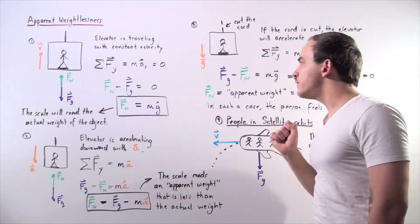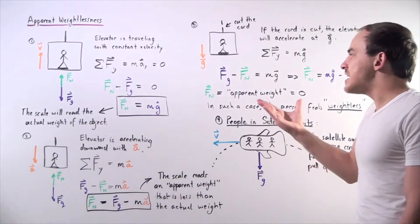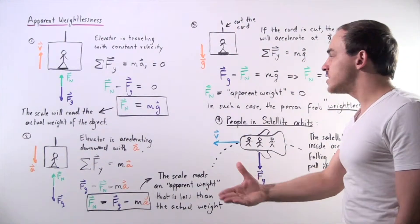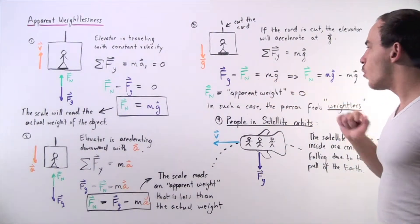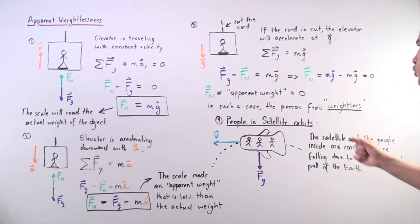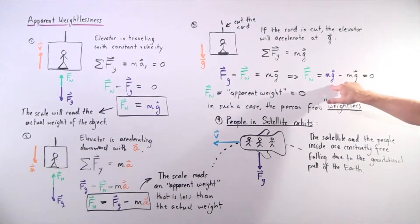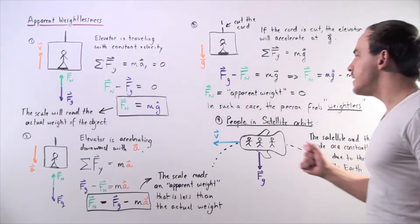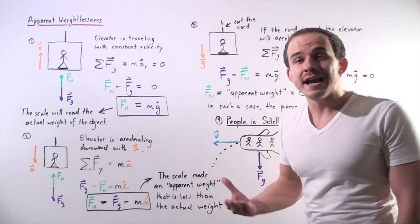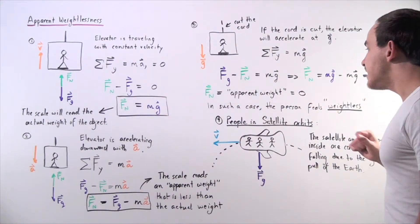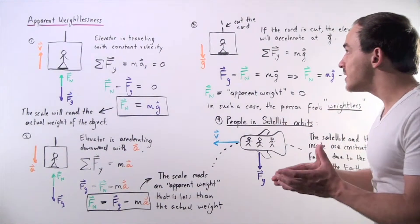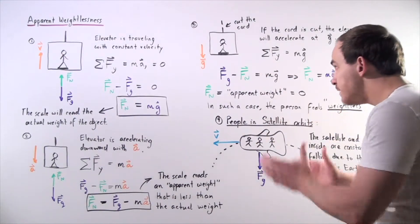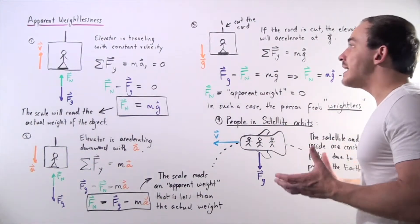We have the same two forces acting on the person. The gravitational force pointing downward is chosen to be positive, and minus the normal force equals mg. Solving for the normal force, N equals mg minus mg. Since these values are exactly the same, the normal force — or apparent weight read by the scale — is zero. The person feels weightless inside a free-falling elevator.